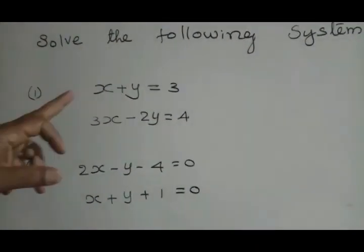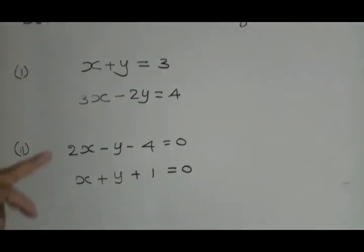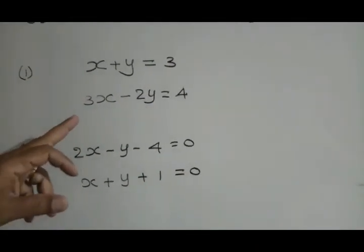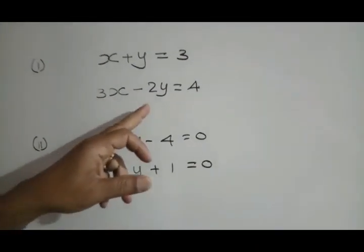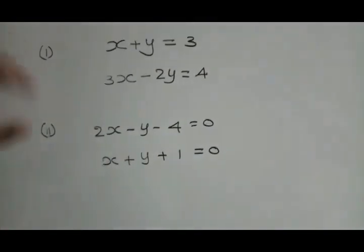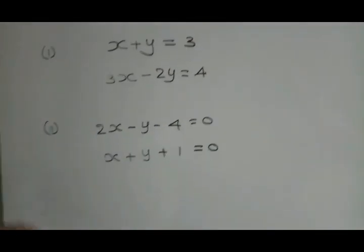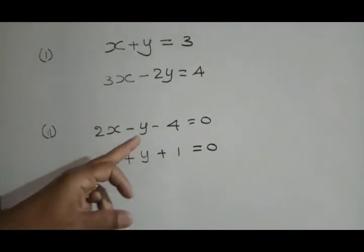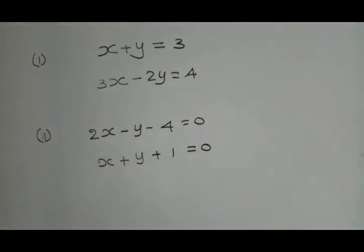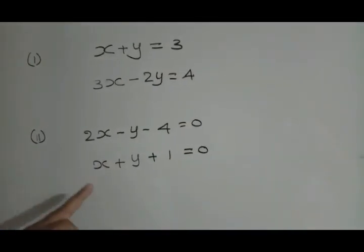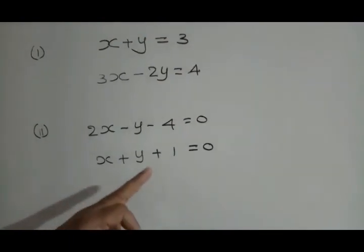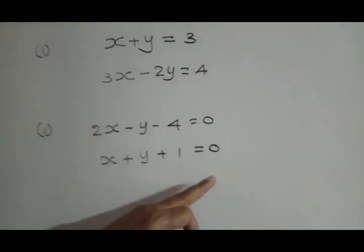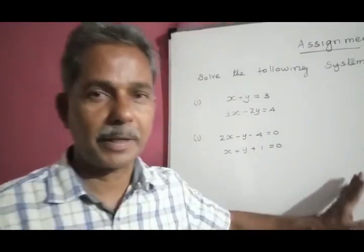Now let us note down the assignment. First set of equations: x plus y is equal to 3, and 3x minus 2y is equal to 4. Second set of equations: 2x minus y minus 4 equal to 0, and x plus y plus 1 is equal to 0.